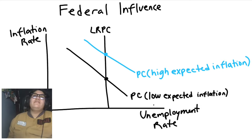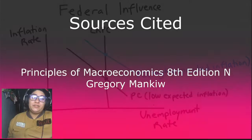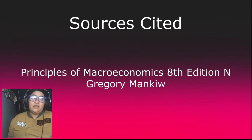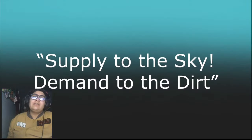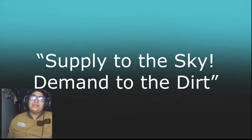I think I've covered all of the main points of chapter 22. Go back and look at all of the bolded words — those were the five key terms. Our source is the Principles of Macroeconomics. And don't forget: supply to the sky, demand to the dirt. That's the phrase I use all the time — it helps so much.